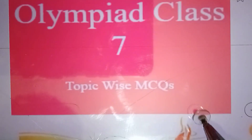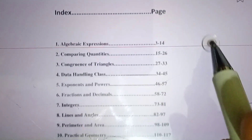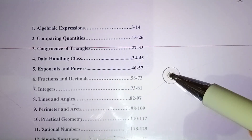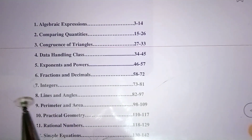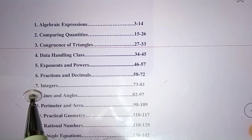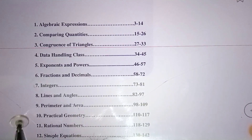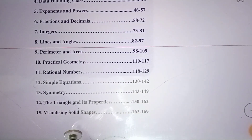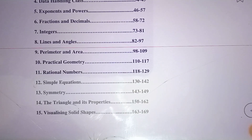Let us see the index — what content we'll cover: algebraic expressions, comparing quantities, congruence of triangles, data handling, exponents and powers, fractions and decimals, integers, lines and angles, perimeter and area, practical geometry, rational numbers, simple equations, symmetry, triangles and their properties, and visualizing solid shapes. You have 15 topics that we are going to see.